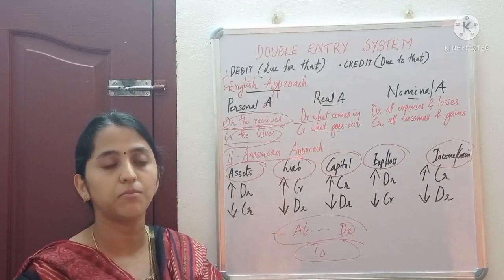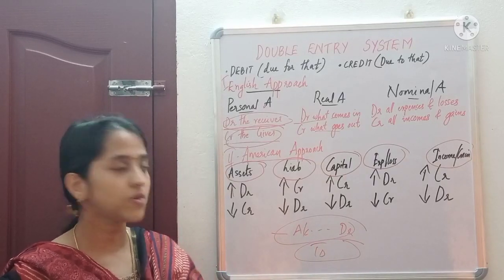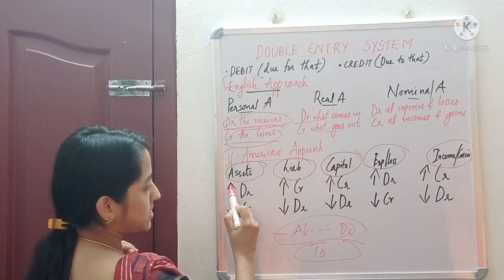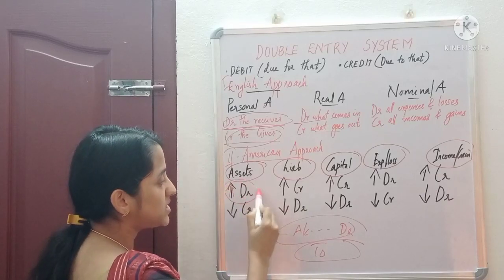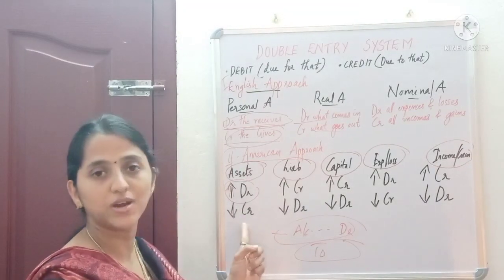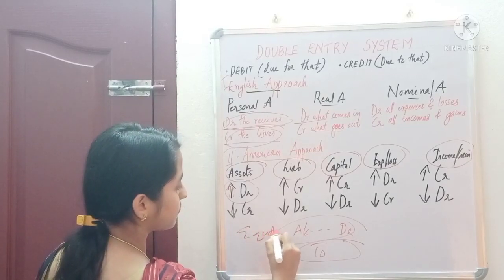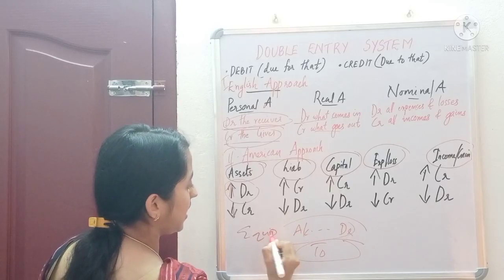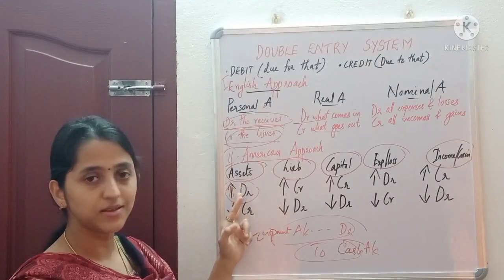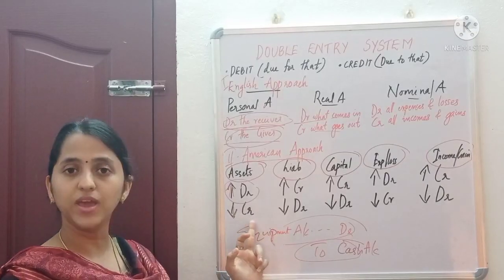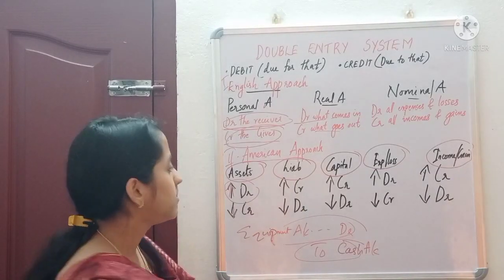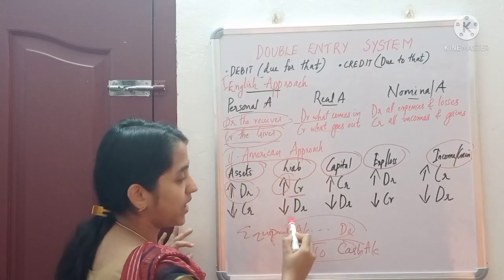For example, if we purchased equipment for cash, equipment is an asset that comes into the business, so our asset increased — we debit the equipment account. Cash has gone out, so there is a decrease in asset — we credit cash. So the entry is equipment account debit to cash account. Under American approach: if asset increases, debit it; if asset decreases, credit it. For liabilities, if liability increases we credit, and if it decreases we debit.